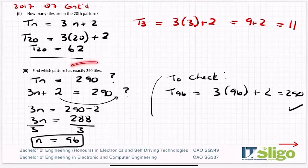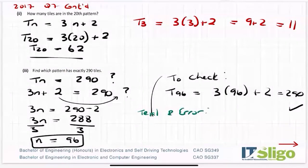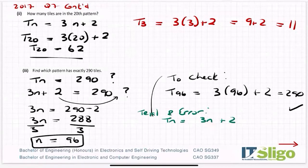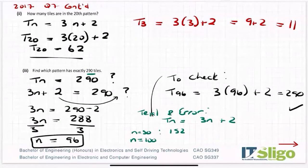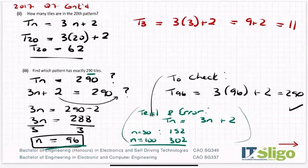Nothing is really stopping you from doing this by trial and error. You know tn = 3n + 2, so you could guess what n is. Try n = 50: 3 × 50 + 2 = 152, which is much less than 290. Try n = 100: 3 × 100 + 2 = 302, which is too big. So you go back and eventually get n = 96. Trial and error is always valid, but the nicer way is to use algebra and solve for n.